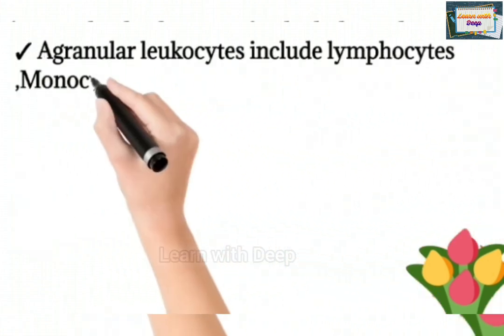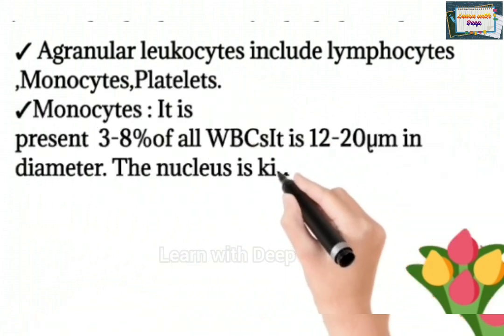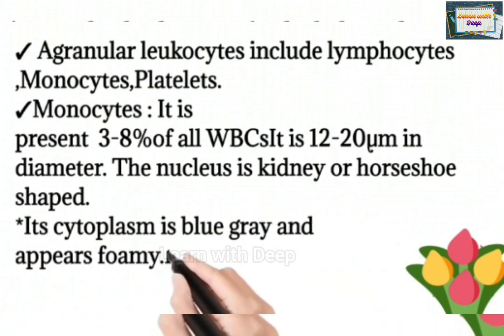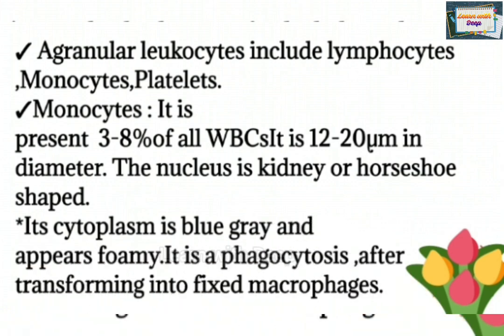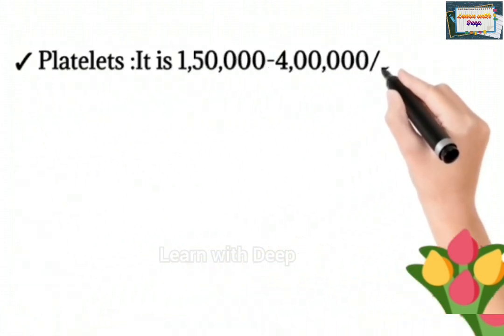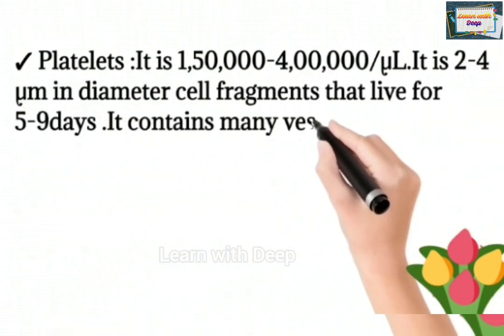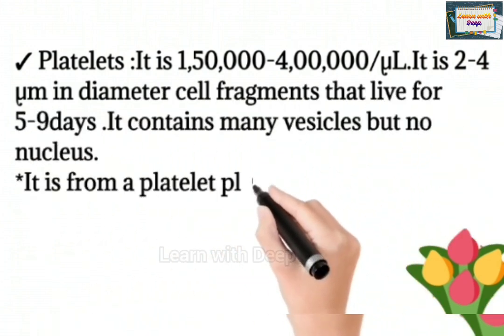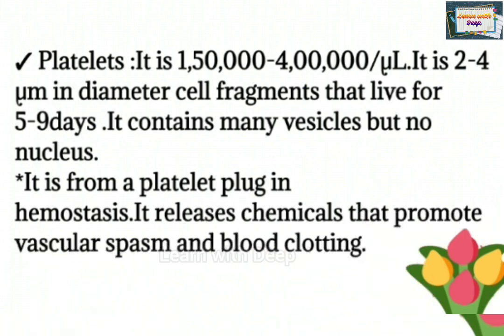Agranulocytes include lymphocytes and monocytes. Monocytes make up 3 to 8% of all WBCs and are 12 to 20 micrometers in diameter. The nucleus is kidney or horseshoe-shaped and the cytoplasm is blue-gray. Platelets number 150,000 to 400,000 per microliter and are 2 to 4 micrometers in diameter. They are cell fragments that live for 5 to 9 days, contain many vesicles but no nucleus, and form a platelet plug in hemostasis.